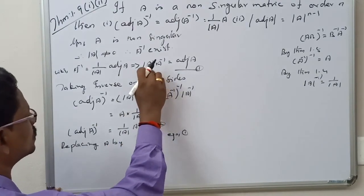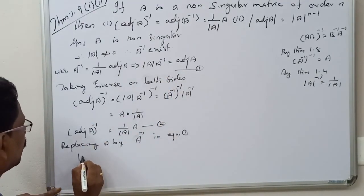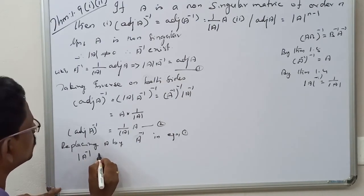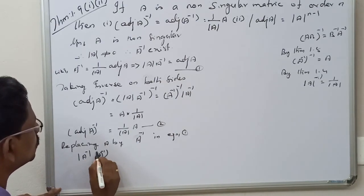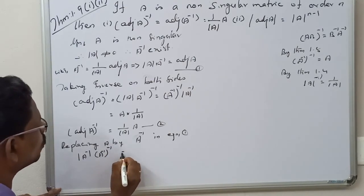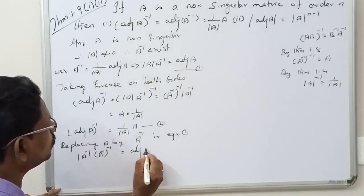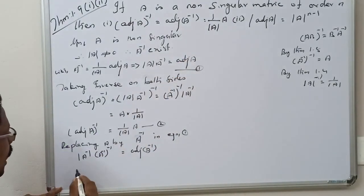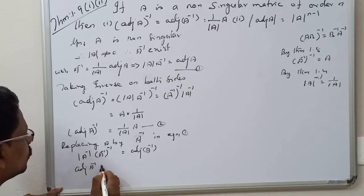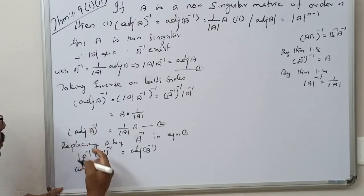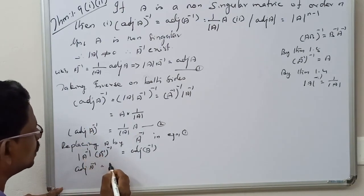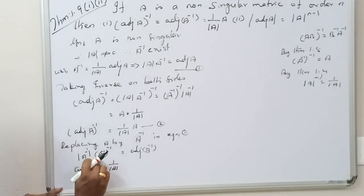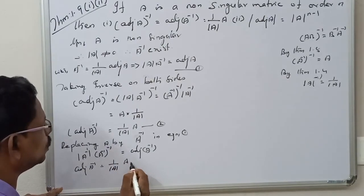A inverse: what is determinant of A inverse? A inverse the whole inverse equals adjoint of A inverse. Now, A inverse equals A inverse; determinant of A inverse equals 1 by determinant of A into A inverse; the whole inverse equals A. This is equation number three.